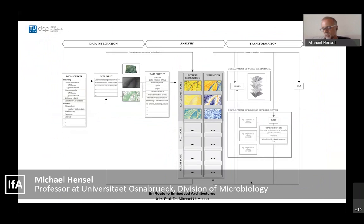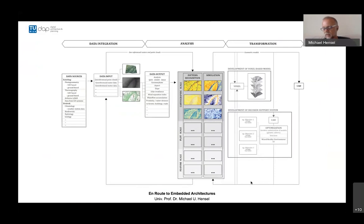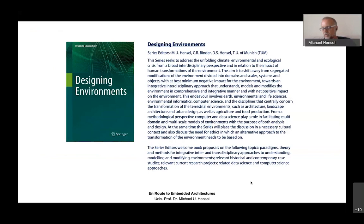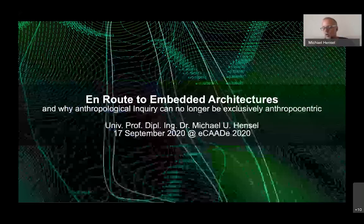Working at the intersection between architecture, landscape architecture, urban design, environmental science, ecology, agronomy, and data and computer science involves the need to permanently expand knowledge, methods, and skills. To facilitate this, we have started a symposium series examining the relation between architecture and environment from different interdisciplinary perspectives. We have also started a new book series with Springer Nature entitled Designing Environments, seeking new interdisciplinary insights and sharing findings with the community in true research spirit.